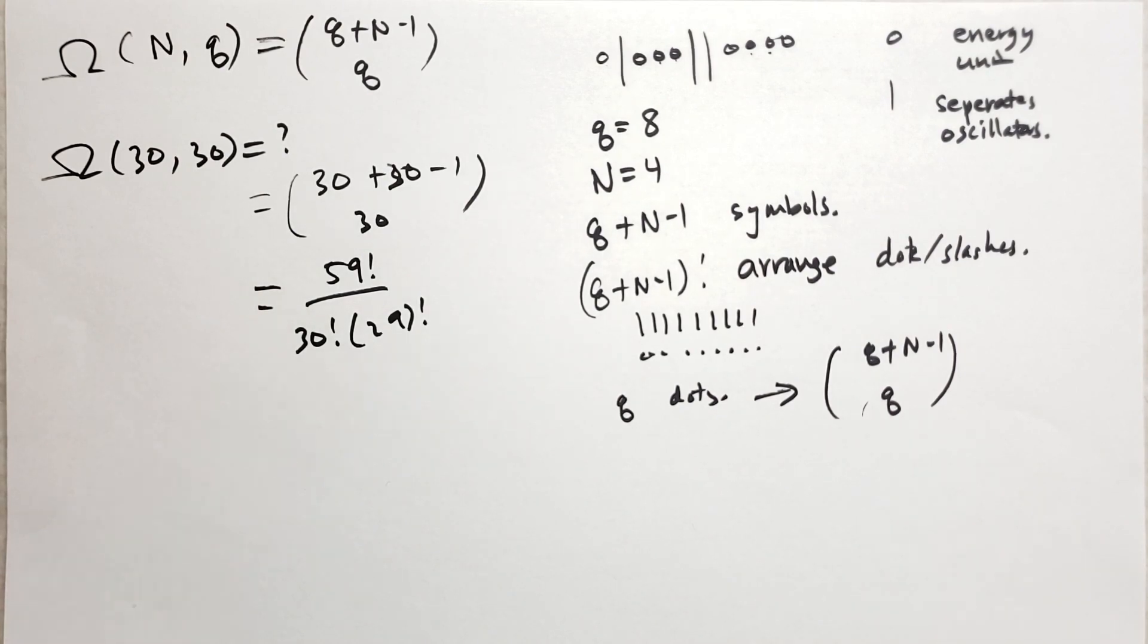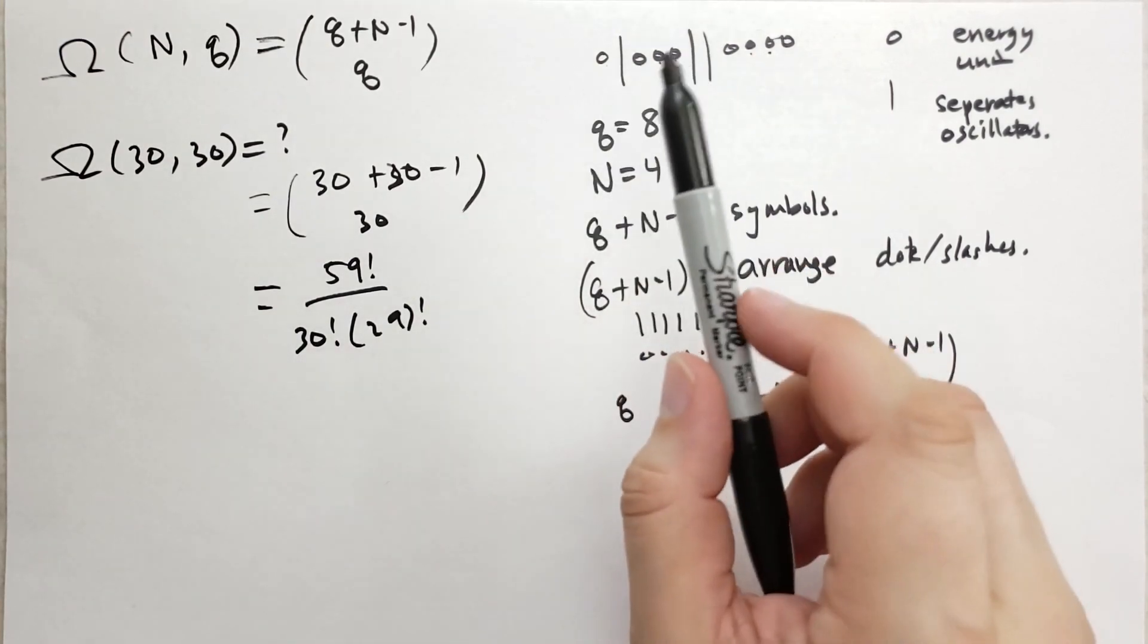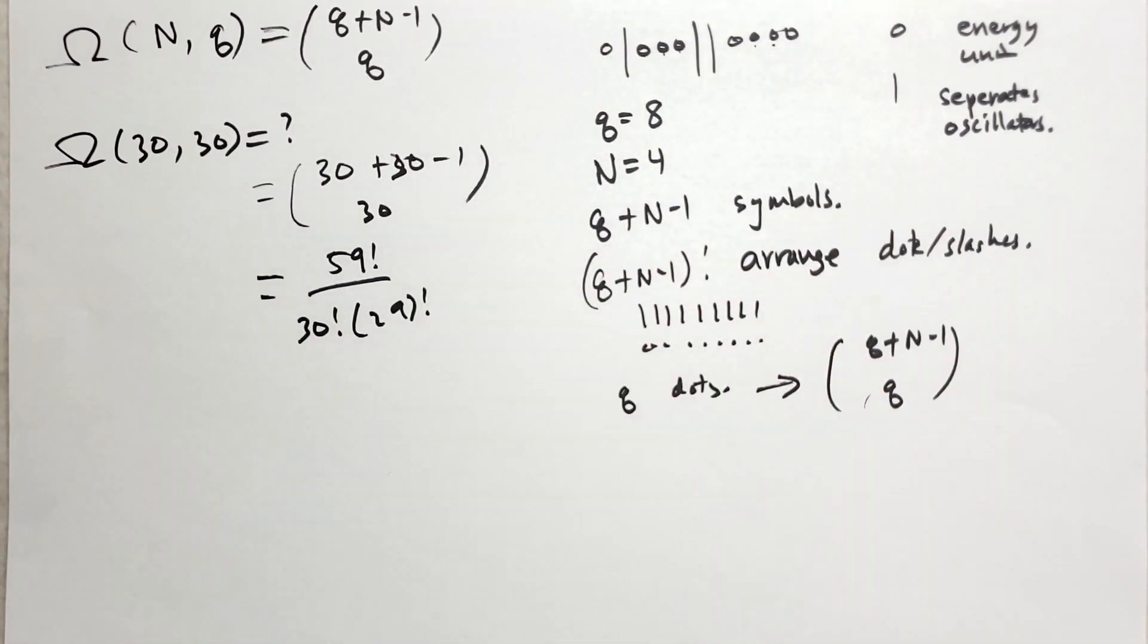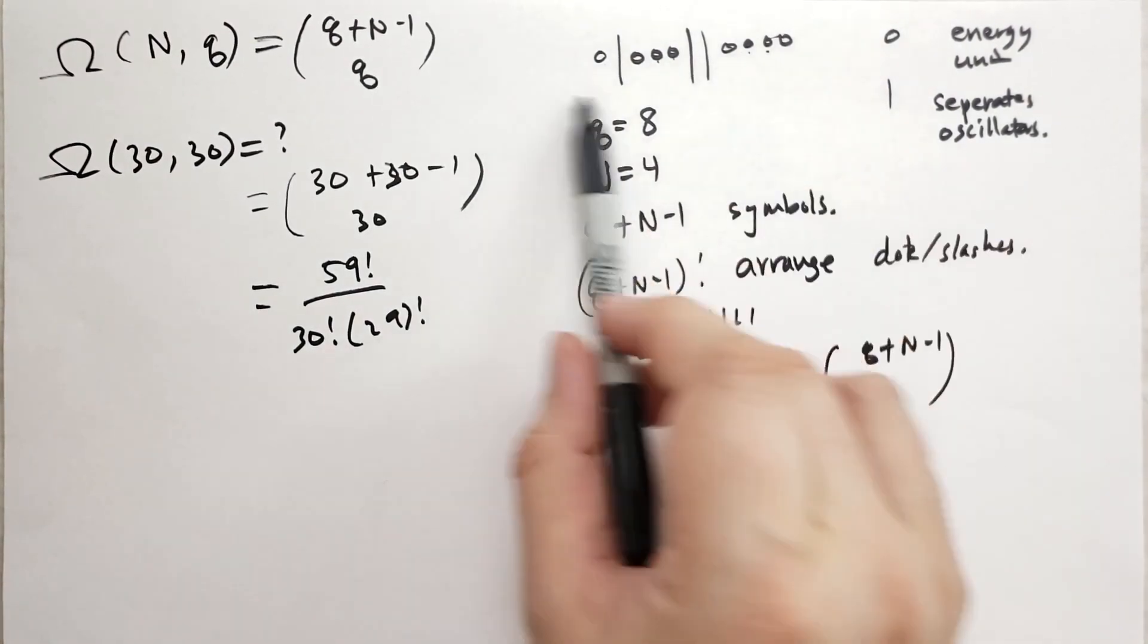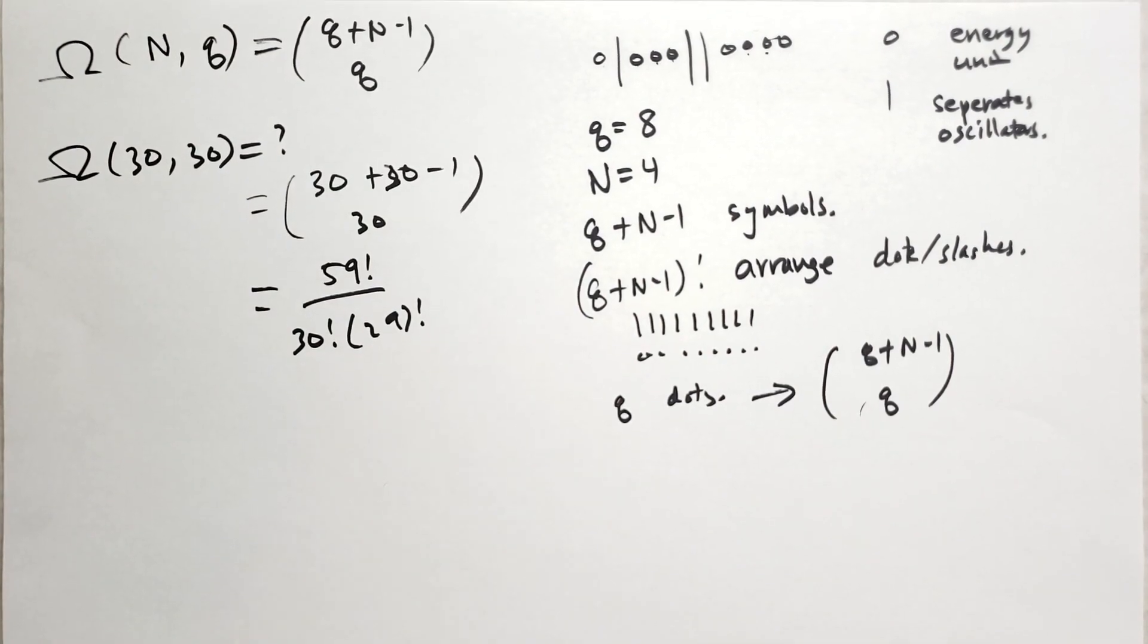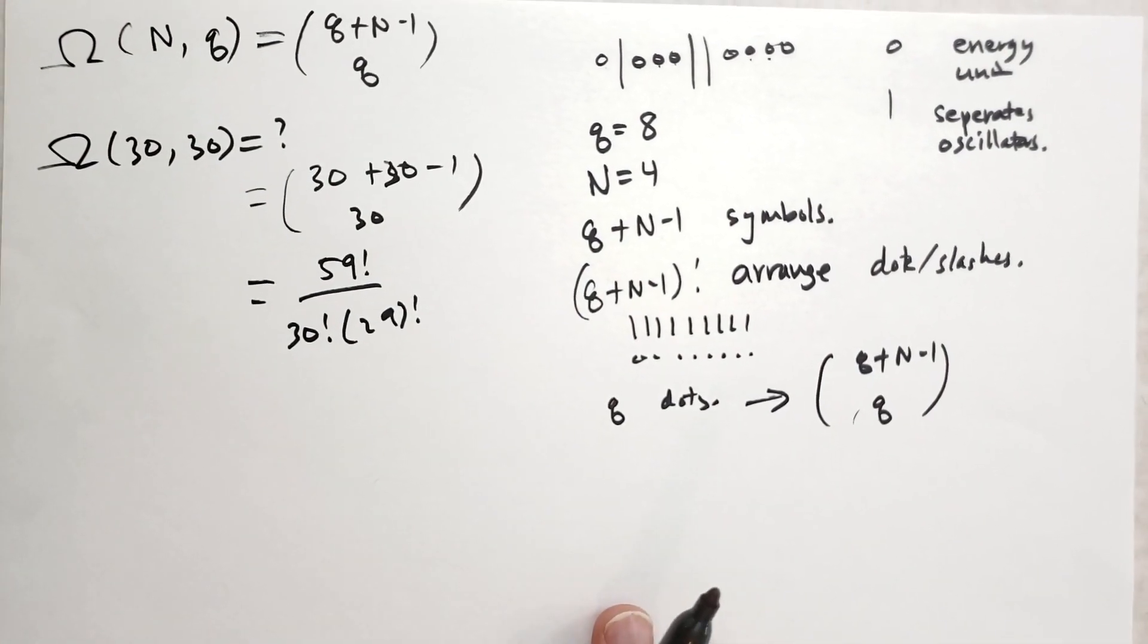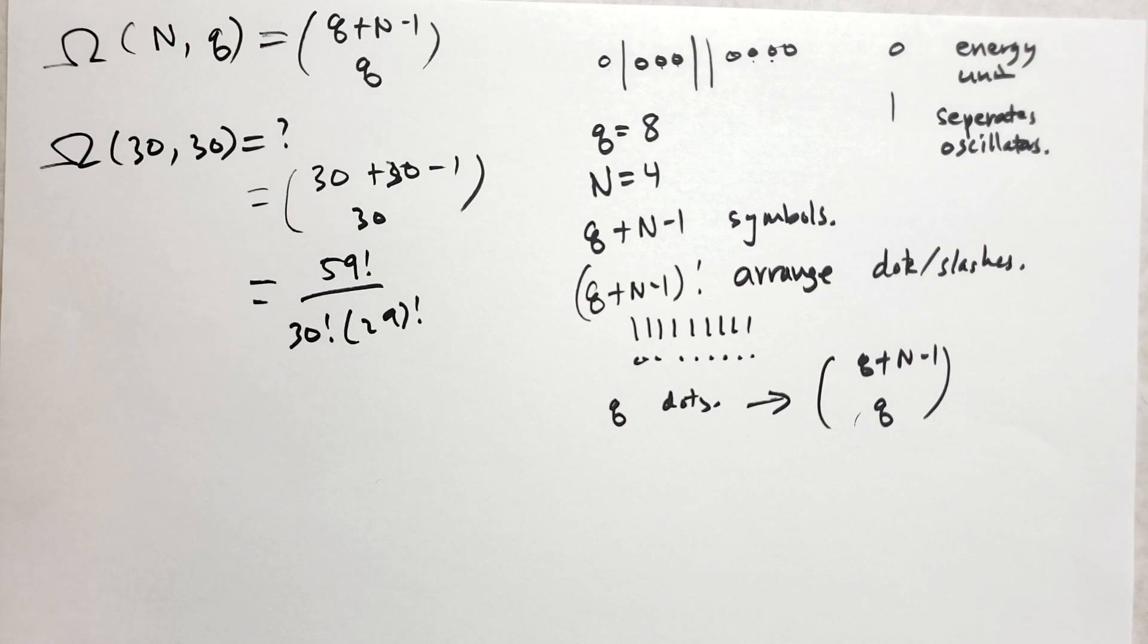Problem 2.7: For an Einstein solid with 4 oscillators and 2 units of energy, represent each possible microstate as a series of dots and vertical lines, as used in the text to prove section 2.9. So he wants you to use Q equals 2 and N equals 4, and then come up with all the possible ways to arrange those symbols, such that you have 2 dots and you have 3 lines.